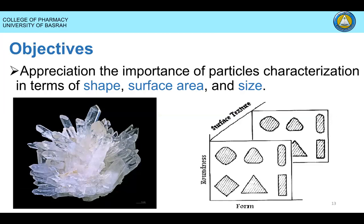Next, the solid powder properties — micromeretics. What is a powder molecule? What are its properties? The properties include morphology, size, shape, and distribution. The application of micromeretics in pharmacy: we're going to know what devices we can use to determine these morphological properties and what the benefit of these morphological properties is.